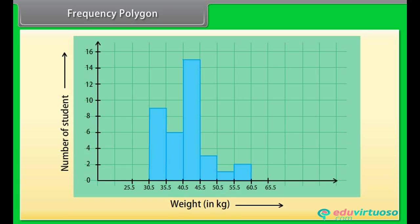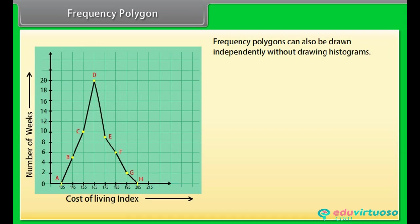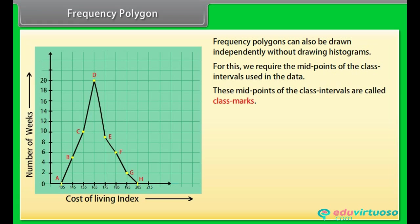Frequency polygon: In a frequency polygon, a line graph is drawn by joining all the midpoints of the tops of the bars of a histogram. Frequency polygons can also be drawn independently without drawing histograms. For this, we require the midpoints of the class intervals, which are called class marks.